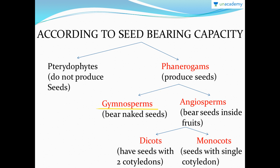Gymnosperms — 'gymno' means naked and 'sperms' means seed — so gymnosperms have naked seeds, meaning they are not fruit-bearing plants. Angiosperms — 'angio' means covered and 'sperma' means seeds — they bear fruits in which the seed is enclosed.